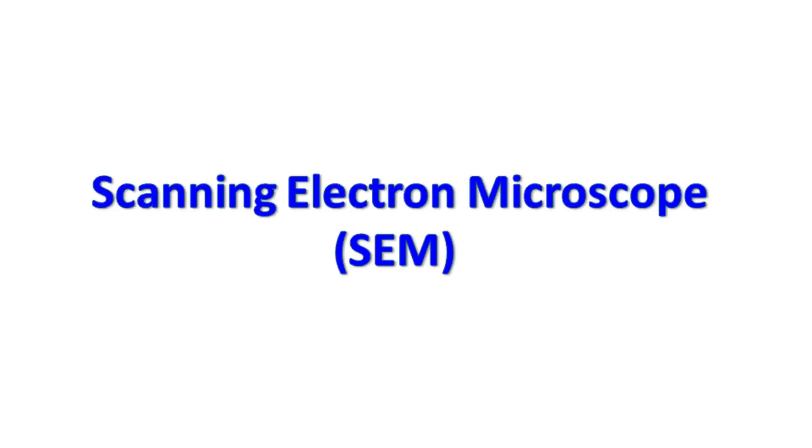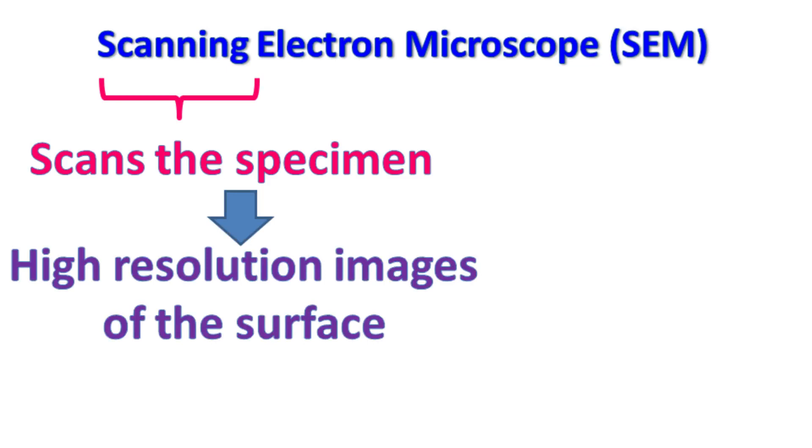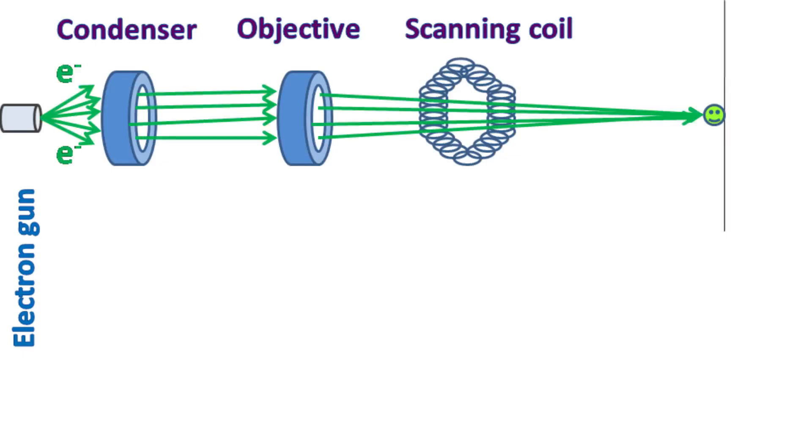Let's talk about scanning electron microscope. As the name suggests, this microscope scans the specimen and gives high-resolution images of the surface. The SEM consists of an electron gun as a source of electrons, condenser lens, and objective lens which focuses the beam of electrons on the specimen. The scanning coil usually scans the electron beam in x and y direction.